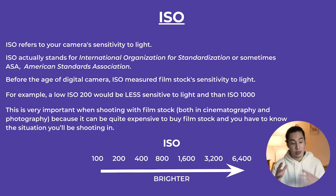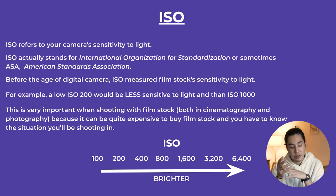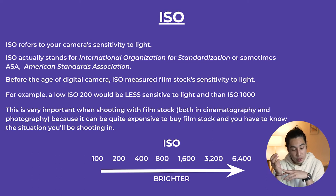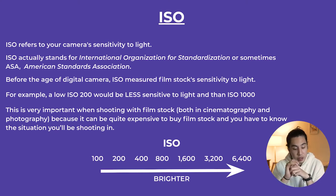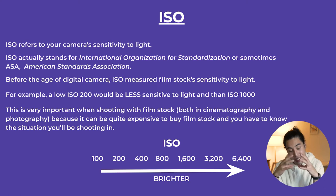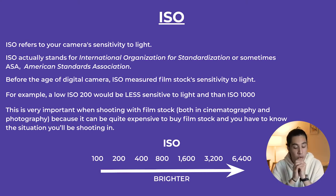Moving on: ISO. ISO refers to your camera's sensitivity to light. ISO stands for International Organization for Standardization, or sometimes ASA — American Standards Association. You don't need to know what this stands for. Before the age of digital cameras, ISO measured film stock sensitivity to light. A low ISO would be less sensitive to light than an ISO of 1000. This is very important when shooting film stock, both in cinematography and photography, because buying film can be quite expensive.